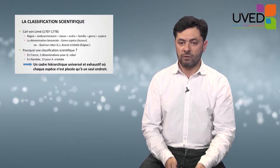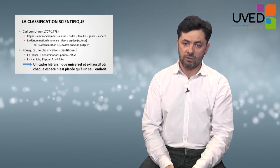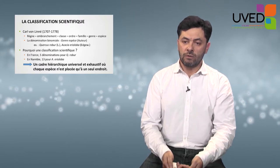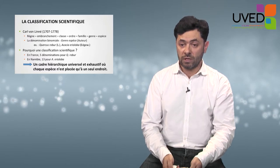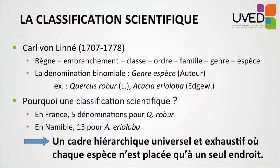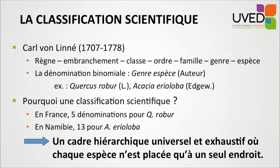Why a scientific classification? Because plants and animals may have different denominations. In France, Quercus robur, the white oak, has two common names and three regional or local denominations. In Namibia, Acacia erioloba has up to 13 denominations — three from colonial languages (German, English, and Afrikaans) and ten local denominations coming from seven local languages.